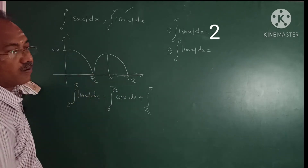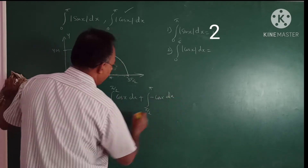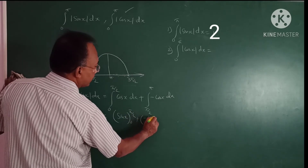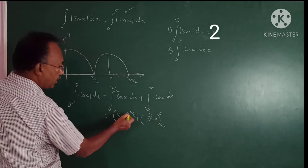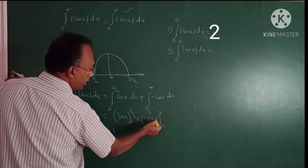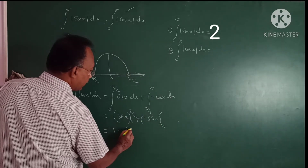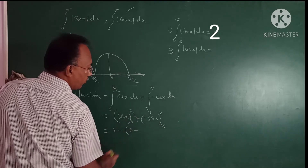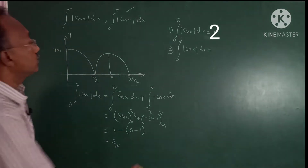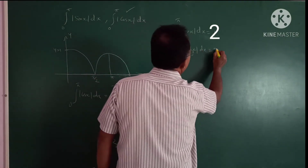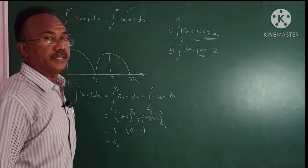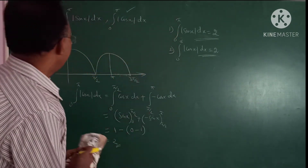Modulus cos x from 0 to π/2 equals cos x, and from π/2 to π equals minus cos x. Integrating: sin x with limit 0 to π/2, plus minus sin x with limit π/2 to π. Upper limit sin(π/2) = 1, lower limit sin(0) = 0, giving 1. Then minus sin π minus minus sin(π/2) gives 0 minus (−1) = 1. Total answer: 1 plus 1 = 2. So the integral of modulus cos x dx from 0 to π equals 2.